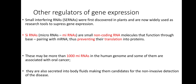Other regulators of gene expression: Small interfering RNAs (siRNAs) were first discovered in plants and are now widely used as research tools to suppress gene expression. siRNAs and microRNAs are small non-coding RNA molecules that function through base pairing with mRNA, thus preventing translation into proteins. There may be more than 1,000 microRNAs in the human genome, and some of them are associated with oral cancer. They are also secreted into body fluids, making them candidates for non-invasive detection of disease.